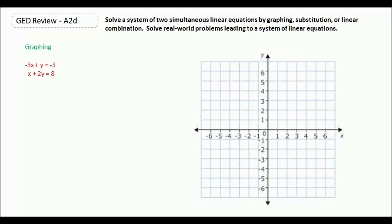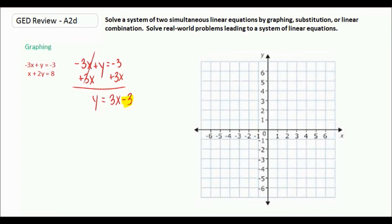Finally, we can solve this by graphing. I'm not going to go into a lot of detail here, so if you need to, please watch the separate video on graphing linear equations. To graph these I first need to put them in slope-intercept form. For the first equation, I add 3x to the other side and get y equals 3x minus 3. The y-intercept is at negative 3, and the slope is 3, meaning 3 up and 1 to the right.